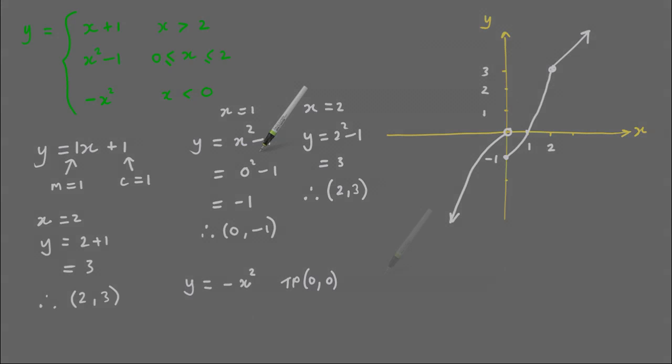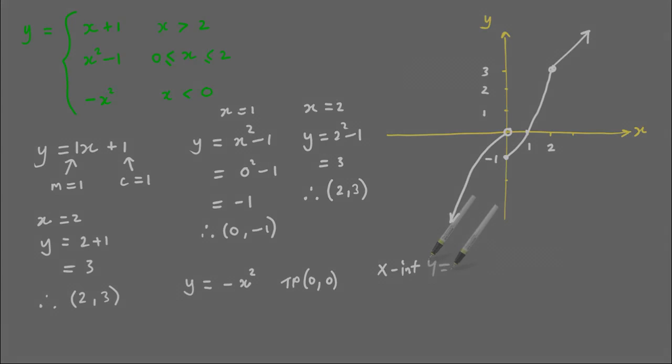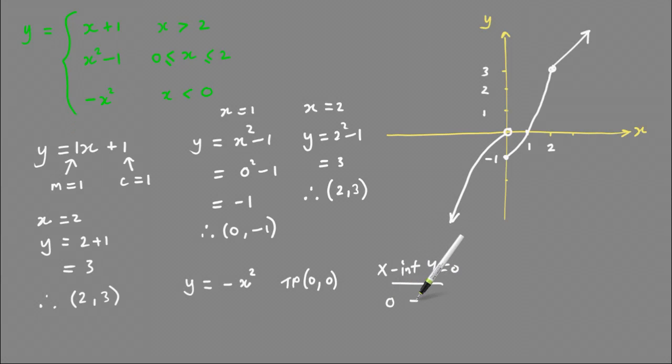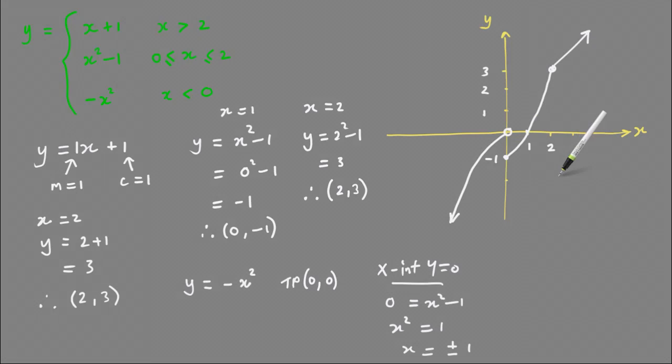For the x-intercept for that one, let y equal 0, so you end up with 0 equals x squared minus 1. Then adding 1 to both sides, you end up with x squared equals 1, and from there x equals the square root of 1, which is plus or minus 1. That means that would be passing positive 1 there, so you need to mark that in on the scale as well. If you're asked to show intercepts, that's pretty much how to sketch this hybrid function.